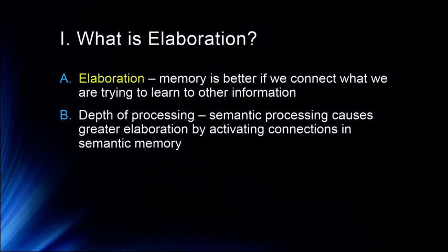Whereas if I ask you if apple has two syllables, you just go 'apple' and don't think about what apple means. But when we think about its meaning, we connect to all of that other information — that richness of our semantic memory is what we get a chance to connect the thing we're trying to remember to. That's why depth of processing is a type of elaboration, in particular that kind of semantic processing.